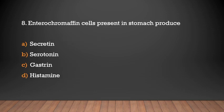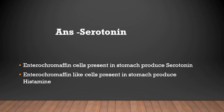Enterochromaffin cells present in the stomach produce: secretin, serotonin, gastrin, or histamine? Answer: Serotonin. Enterochromaffin cells present in the stomach produce serotonin. Enterochromaffin-like cells present in the stomach produce histamine.